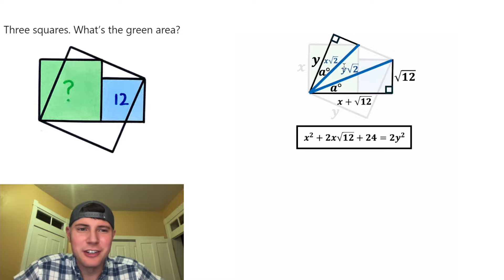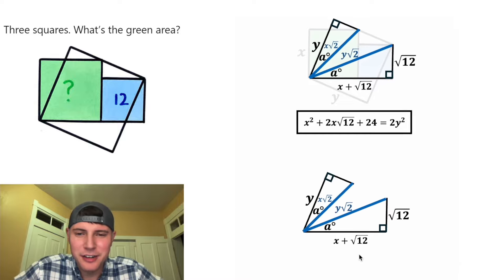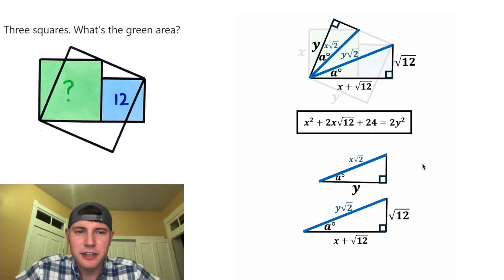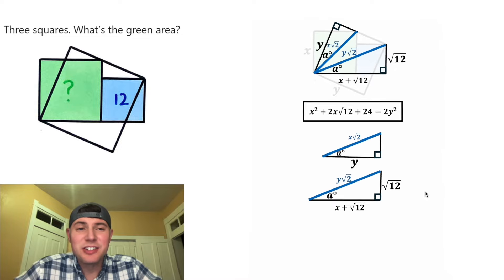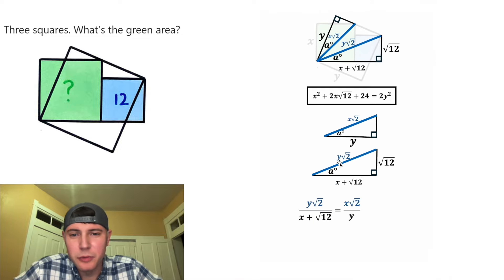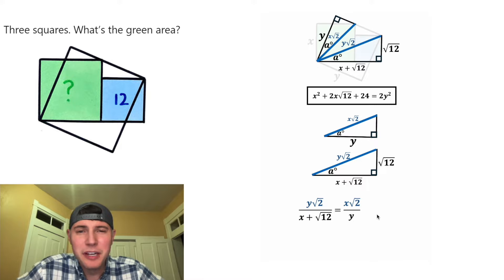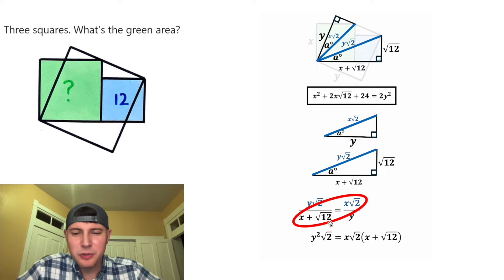Next, let's bring back our other triangle, and let's copy them both down here. And let's take this smaller one and rotate it up here, and let's reflect it. So now these two similar triangles have the same orientation. And the reason that we know these are similar triangles is because we have two pairs of congruent angles. And since they're similar, we can set up a proportion. We can do top over bottom equals top over bottom. So it'll be Y root two over X plus root 12 equals X root two over Y. And then we can cross multiply. This will give us Y squared root two, and this will give us X root two times this stuff.